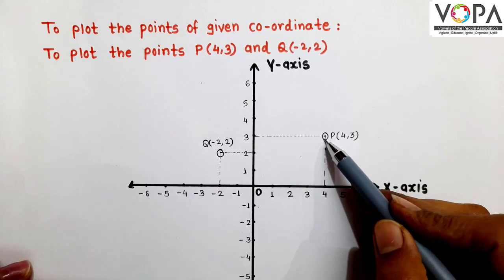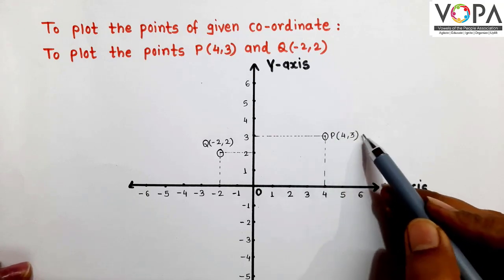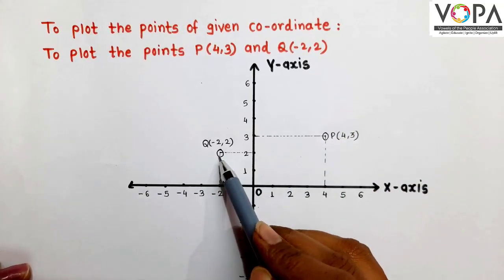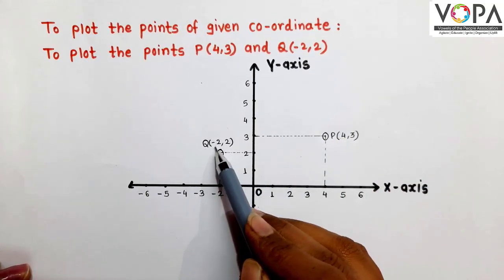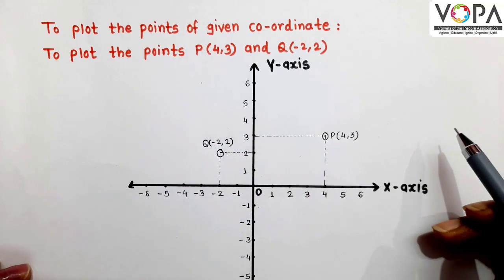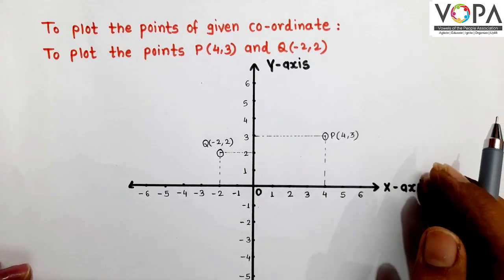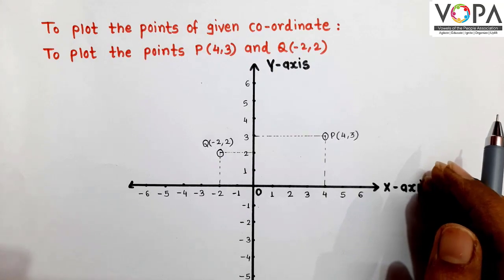This is our point P(4,3) and this is point Q(-2,2). Similarly, we can plot various points of given coordinates.